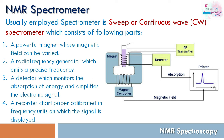The advanced NMR spectrometer used today is the FT-NMR spectrometer, similar to the FT-IR spectrometer. These are called Fourier Transform NMR spectrometers. In this type, the magnetic field is constant and the radio frequency is varied.